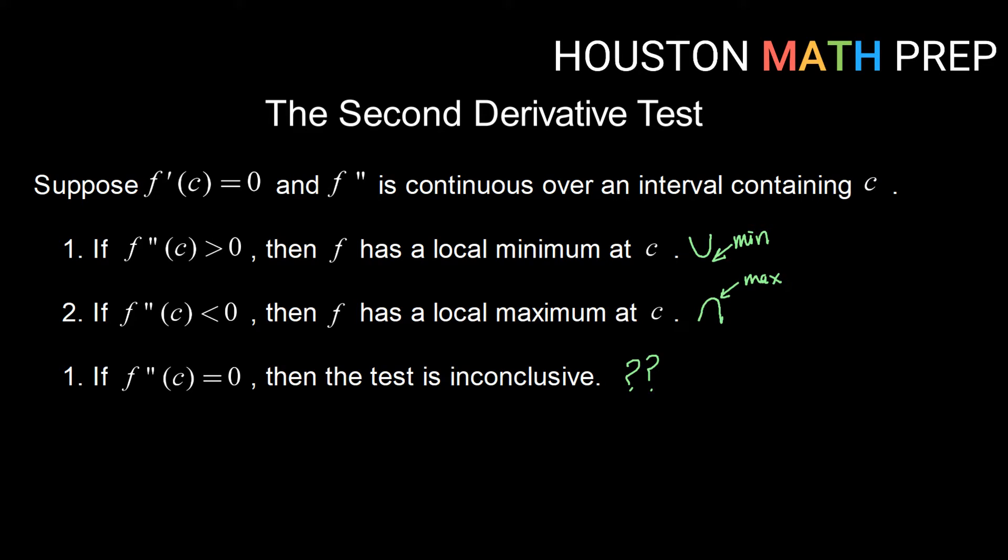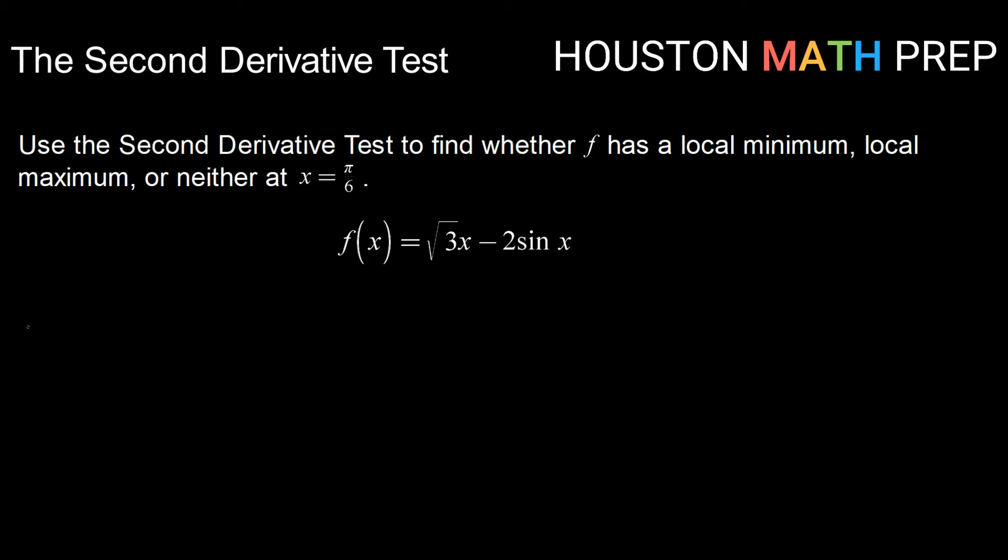Okay, so let's see this in action. Here, let's use the second derivative test to find out whether f has a local minimum, a local maximum, or neither at x equals pi over 6.